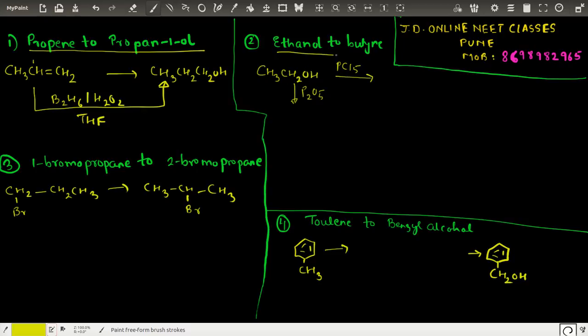Second question is ethanol to butyne. Now let's take ethanol and divide this into two parts. The first part we react with PCl5, so we get CH3CH2Cl. The second we dehydrate - P2O5 is a dehydrating agent, so we get ethene. Now we add chlorine, so we get CH2Cl-CH2Cl, this is a geminal dihalide.